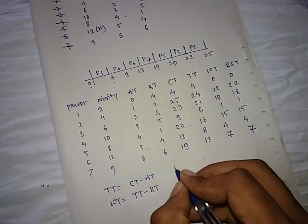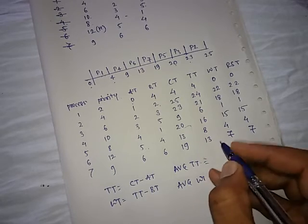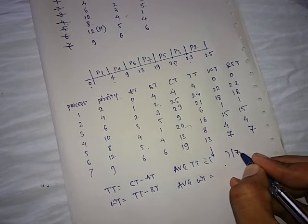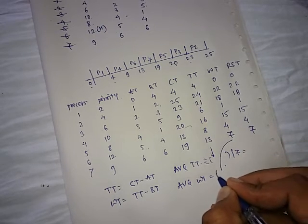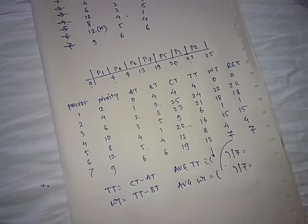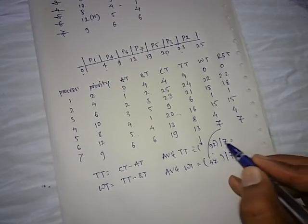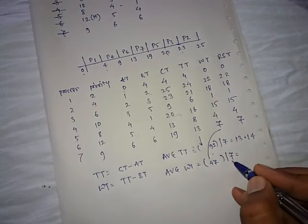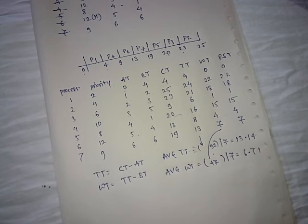Now calculate the averages. Average turnaround time is the sum of all turnaround times divided by the total number of processes (7). Average waiting time: the total is 92 divided by 7, which is approximately 13.14. The average waiting time sum divided by 7 is approximately 6.71.